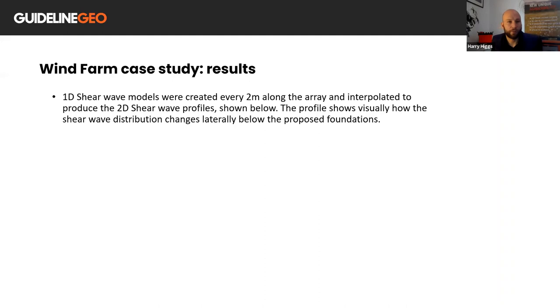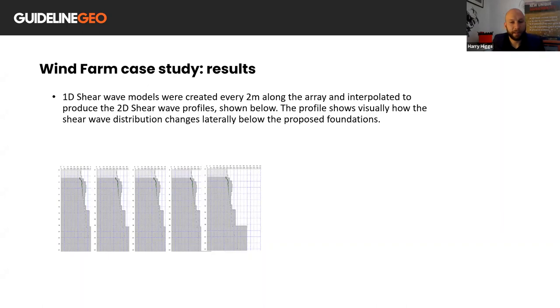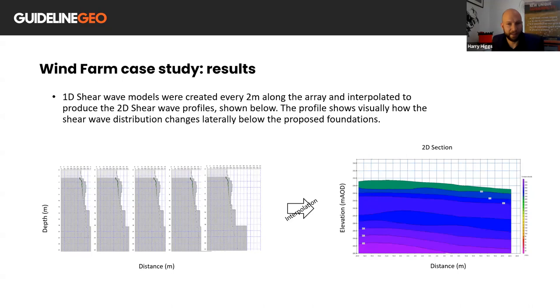For each linear array, the CMPCC method of MASW was used to derive multiple one-dimensional models along each profile length. And then these were interpolated to create a two-dimensional section. So this was also provided to provide some understanding of where ground conditions may vary away from just the central borehole. So one-dimensional and two-dimensional models were provided to the client in this case.